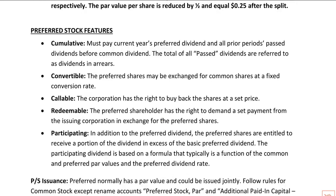Now we're getting into preferred stock. The main feature we're going to carry forward, especially when we get to EPS, is cumulative versus non-cumulative. If you have preferred stock, it's not like debt — you're not required to get a payment every year like an interest payment. But for cumulative preferred stock, if you didn't get your dividend last year or the year before, and this year they're declaring a dividend, before the common stockholder can get anything, they have to pay out your two prior years of dividends. Any year you don't get the full dividend is a past dividend, and the total sum of all past dividends is called dividends in arrears.